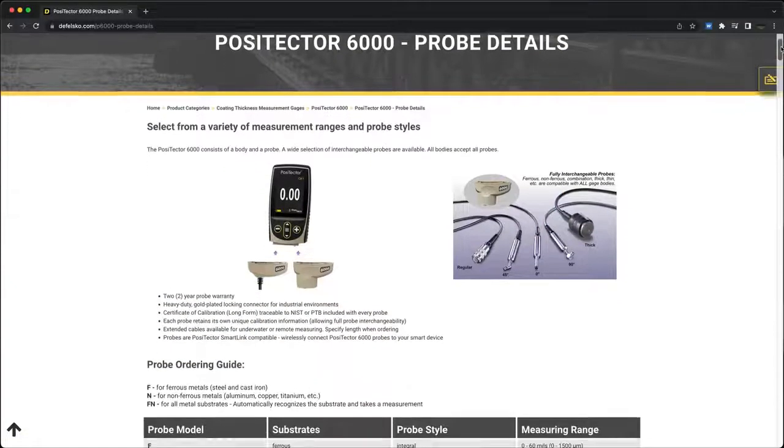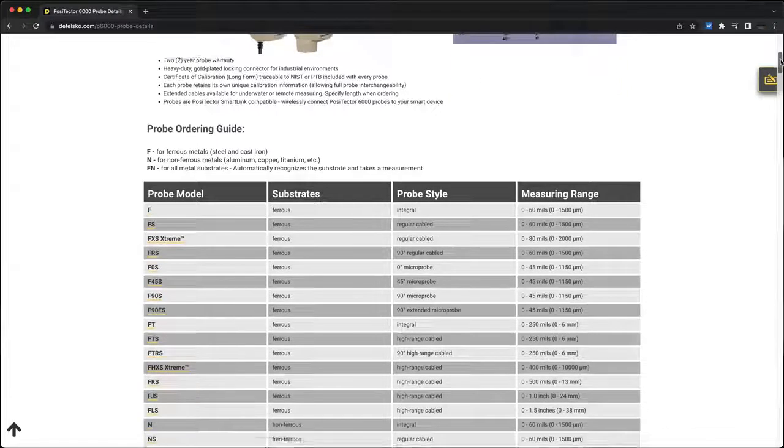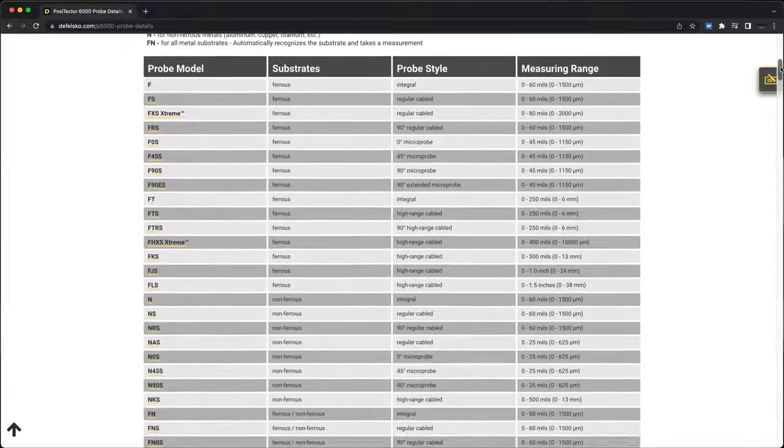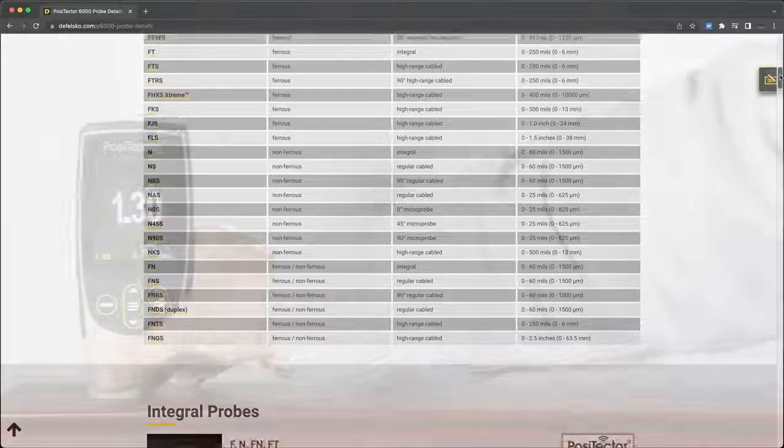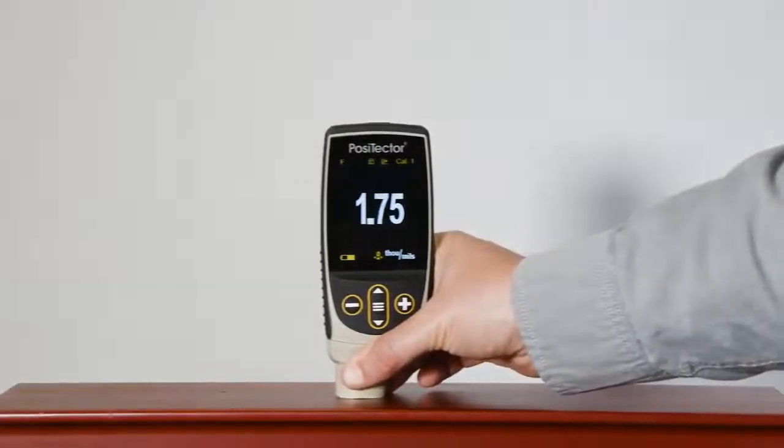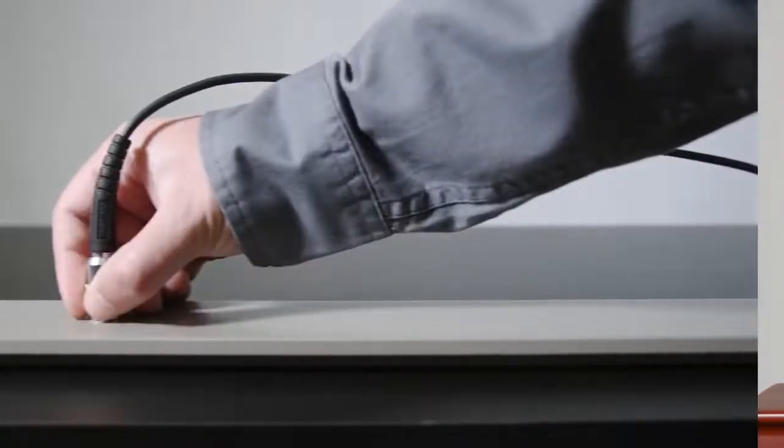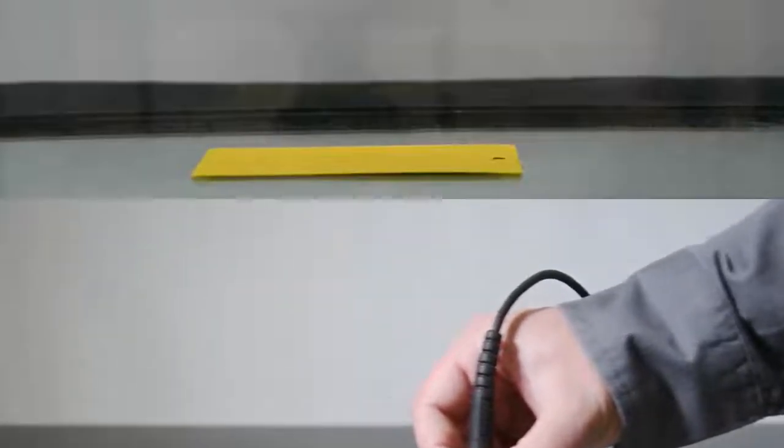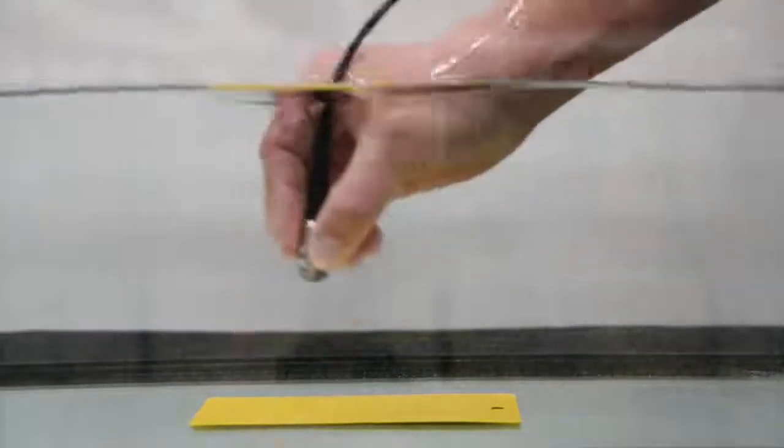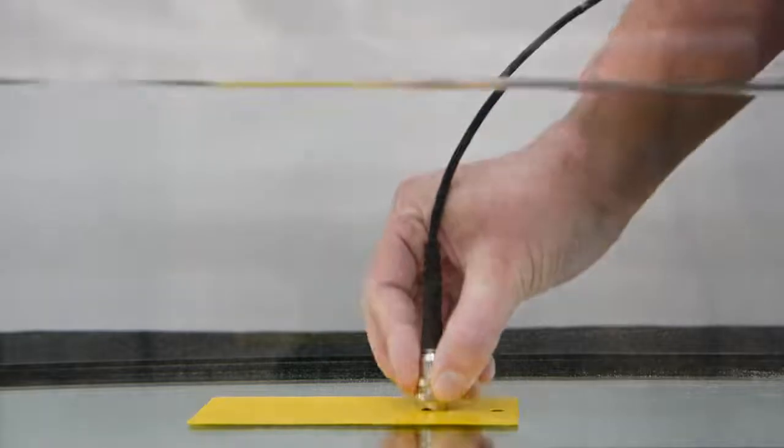DeFelsko manufactures over 25 PosiTector 6000 coating thickness probe models for measuring nearly any application. Integral probes are ideal for one-handed operation, while cabled probes make it easy to access awkward areas, are fully waterproof, and can be extended up to 75 meters or 200 feet.